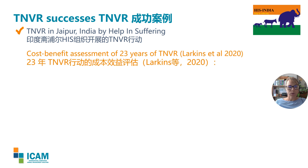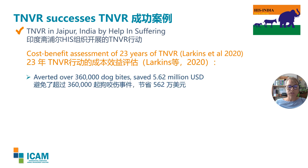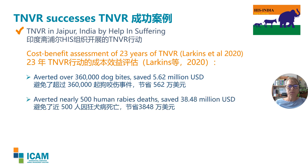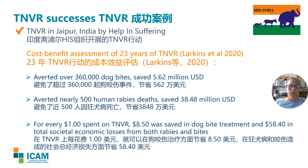The data from Jaipur was used to run a cost-benefit analysis over a 23-year period. This estimated that the TNVR work averted over 360,000 dog bites, saving nearly $6 million for health services. It also estimated that nearly 500 human rabies deaths were averted, saving over $38 million — coming from savings in treatment and from DALYs, the economic implications of early death from rabies. In summary, for every dollar spent on TNVR, $8.50 was saved in bite treatment and $58 in total societal costs from both rabies deaths and bites — an excellent return on investment.